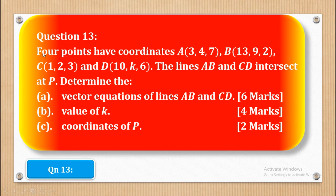Now we shall go to question 13. Question 13 says four points have coordinates: A(3, 4, 7), B(13, 9, 2), C(1, 2, 3), and D(10, K, 6). They tell us that lines AB and CD intersect at point P. Determine the vector equations of lines AB and CD.